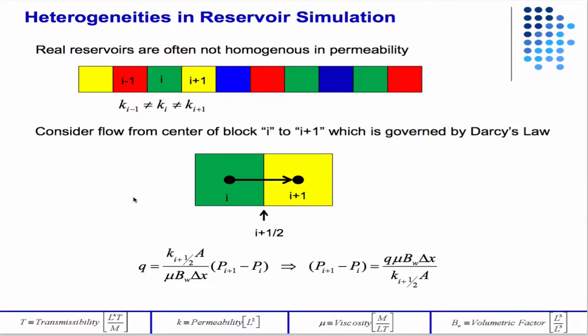So just quickly we'll review all the relationships we derived last time regarding heterogeneity. The first thing we talked about was heterogeneities in permeability. In the illustration there, the colors represent varying permeabilities from grid block i minus 1 to i to i plus 1.